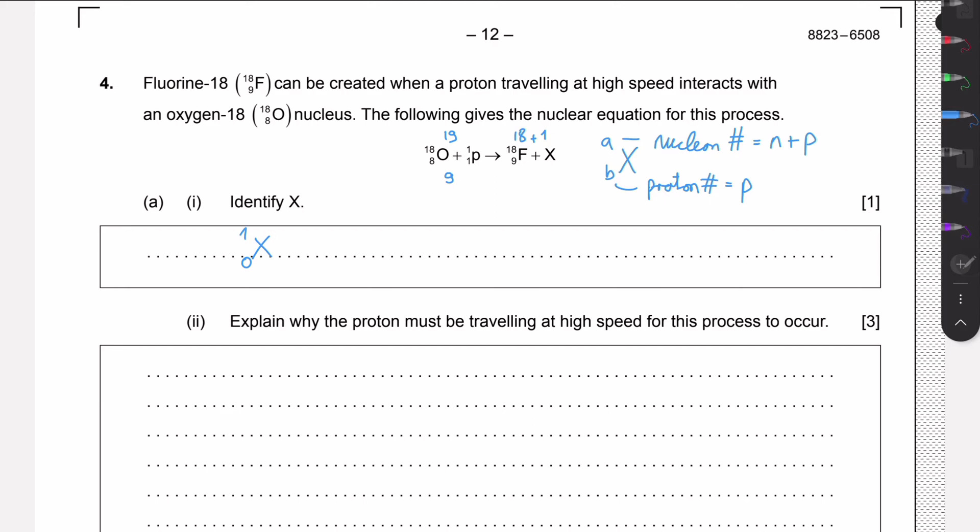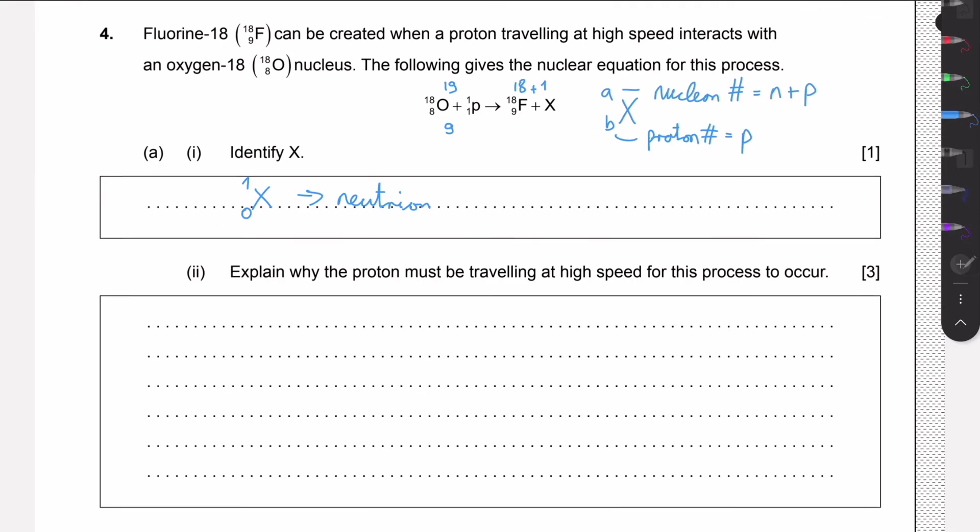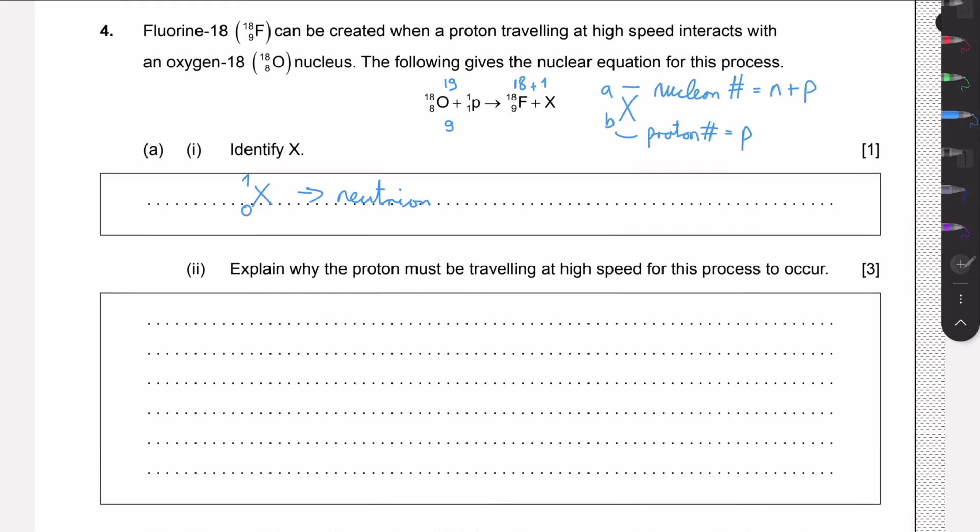So this will be X, and this is what is called a neutron. It has 1 neutron and 0 protons. This is the nucleon number, so in total it has 1 neutron and proton, but from the lower number we see that it has no proton, so it must be a neutron.